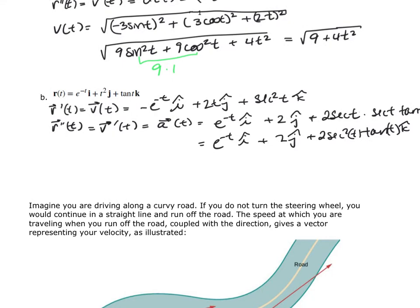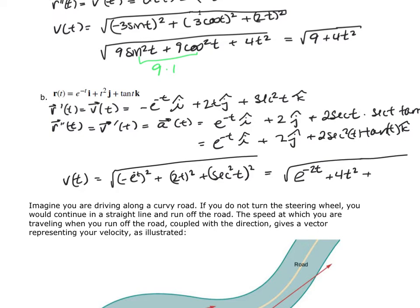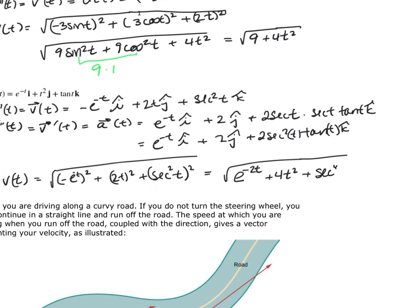The speed v(t) — not a vector — is the square root of (e^(−t))² plus (2t)² plus (sec t)², which gives the square root of e^(−2t) plus four t squared plus secant to the fourth of t. That is the final answer for speed in this example.